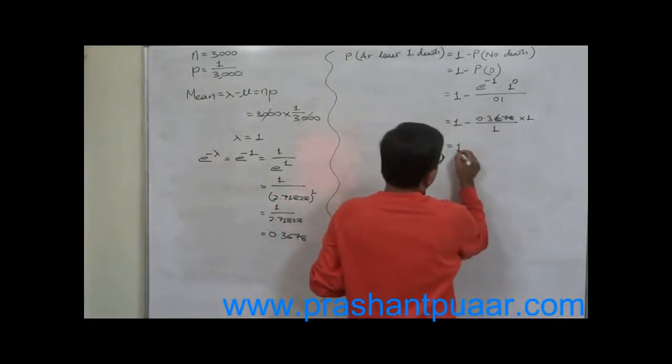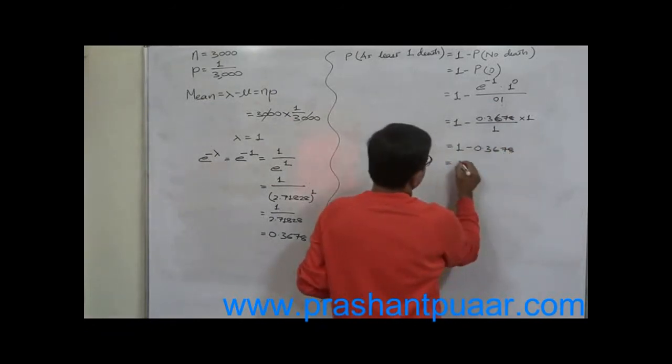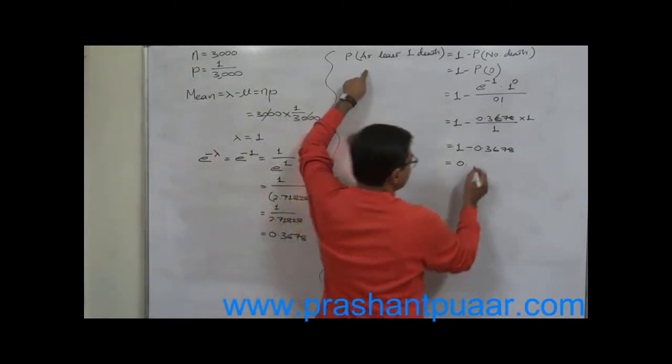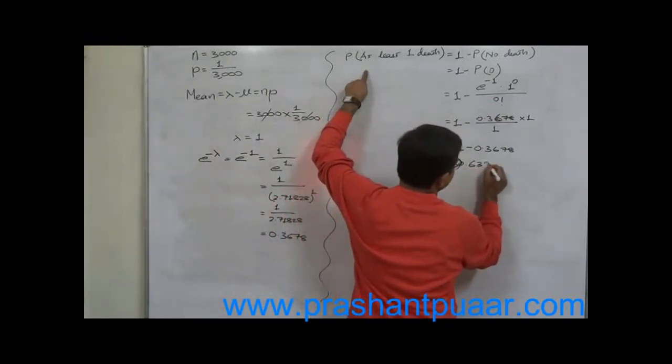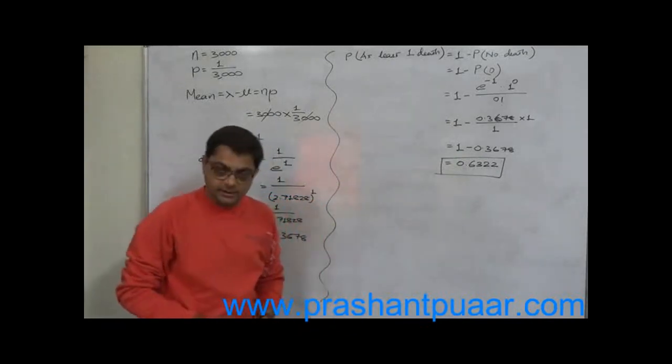So 1 minus 0.3678. The probability of at least one death due to flood is 0.6322. This is the final answer.